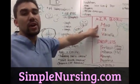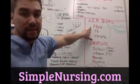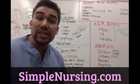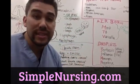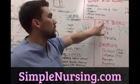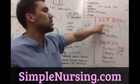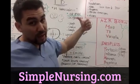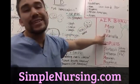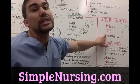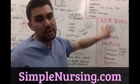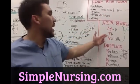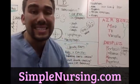Your airborns are your MTV. If you guys saw my video about MTV precautions, you have your MMR — measles, mumps, and rubella — also airborne, TB which is what we're talking about, and also your varicella, which is your chickenpox. These are airborne precautions. Now, varicella, chickenpox, and mumps are also contact precautions.